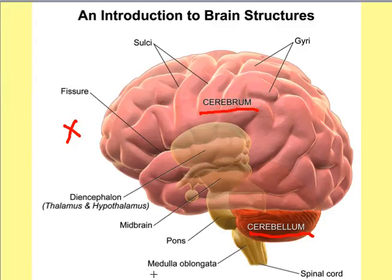We also have this part here called the medulla — the medulla oblongata, but you only need to know the term medulla. The medulla is involved in regulating your heart rate and your respiratory rate. If that part of your brain gets damaged, then you're termed brain dead. From there you've got your spinal cord coming down.